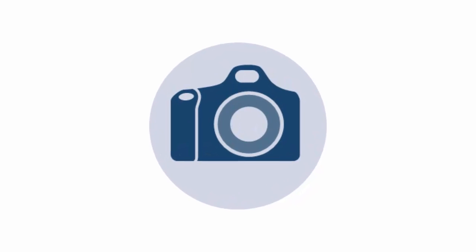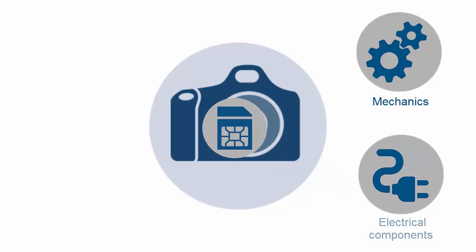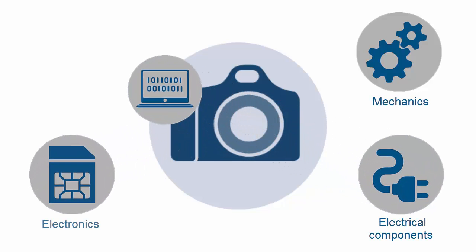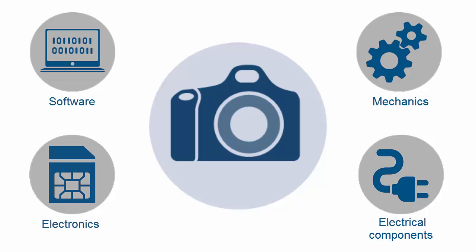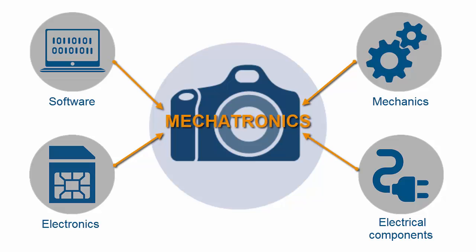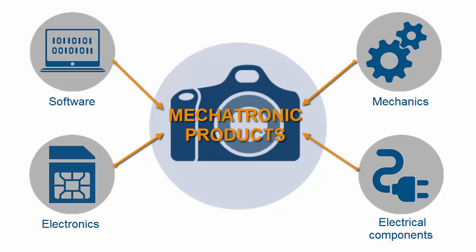Products are much more than just the sum of their parts. The functionality of a product strongly depends on the interaction of its mechanics, electrical components, electronics, and software. This interaction is also referred to as mechatronics. Mechatronic products deliver functionalities that would have been impossible just a few years ago.